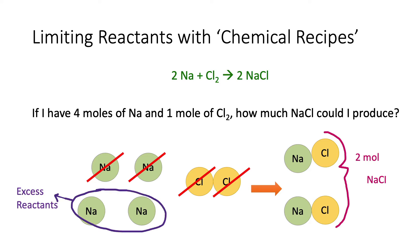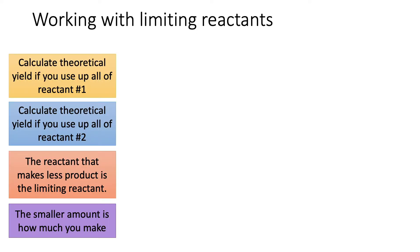What about those extra moles of sodium? Those are what we call excess reactants — they're what's left over when we run out of one ingredient. When talking about limiting reactants, we calculate two theoretical yields: how much you make if you use up all of reactant one, and how much you make if you use up all of reactant two. Whichever reactant makes less is your limiting reactant, and the amount you actually end up making is that smaller amount. You can't make the larger amount because you run out of the other reactant first.